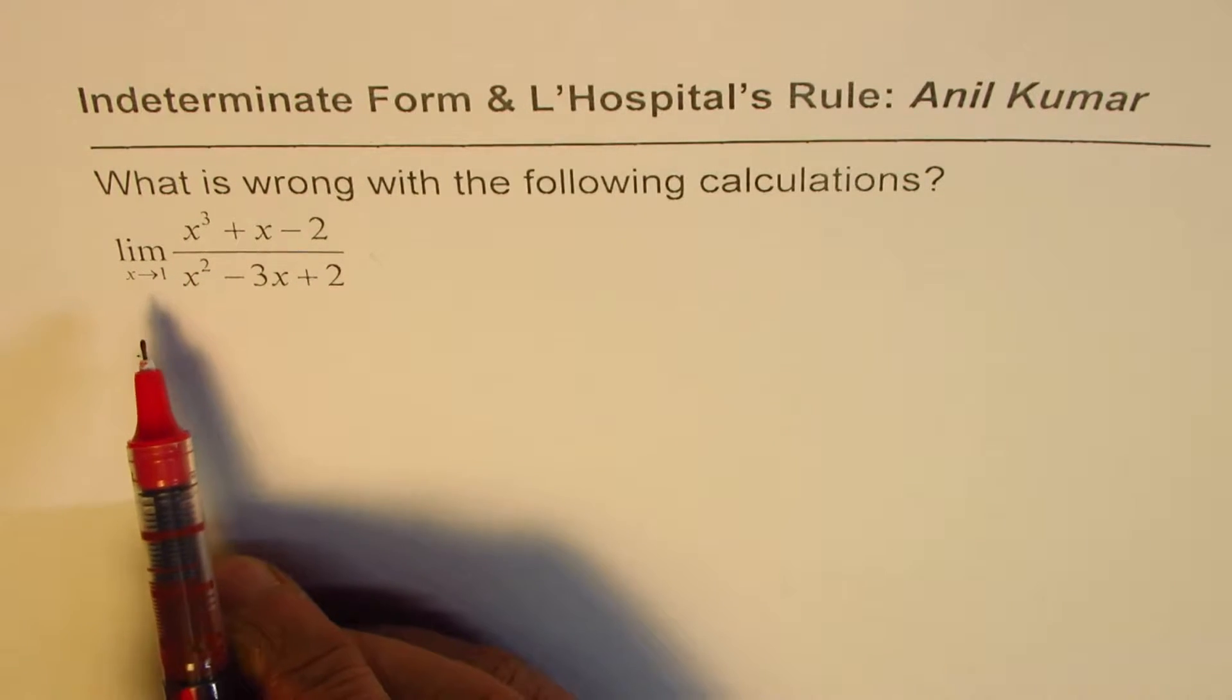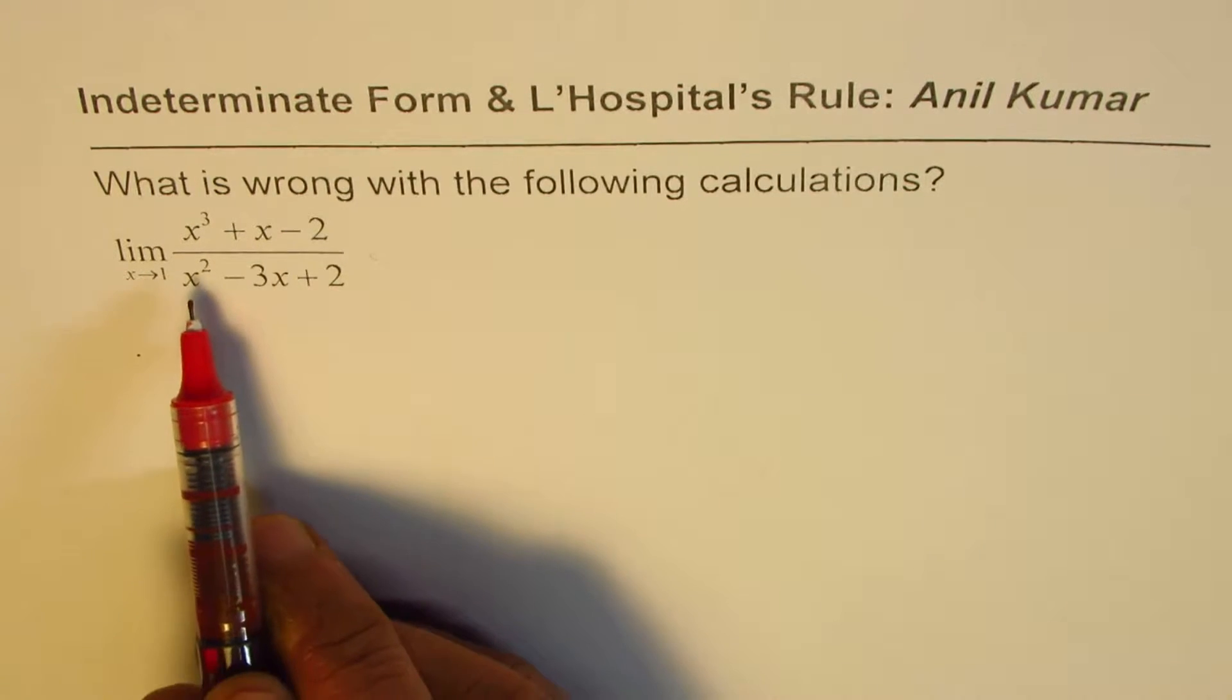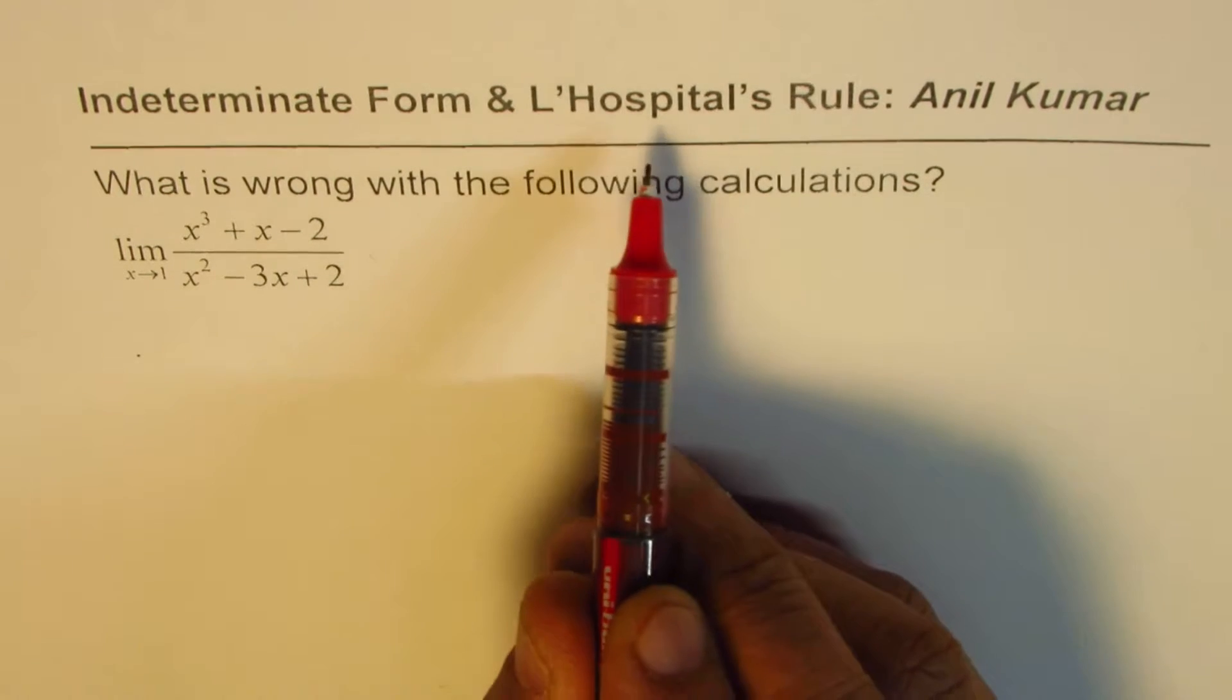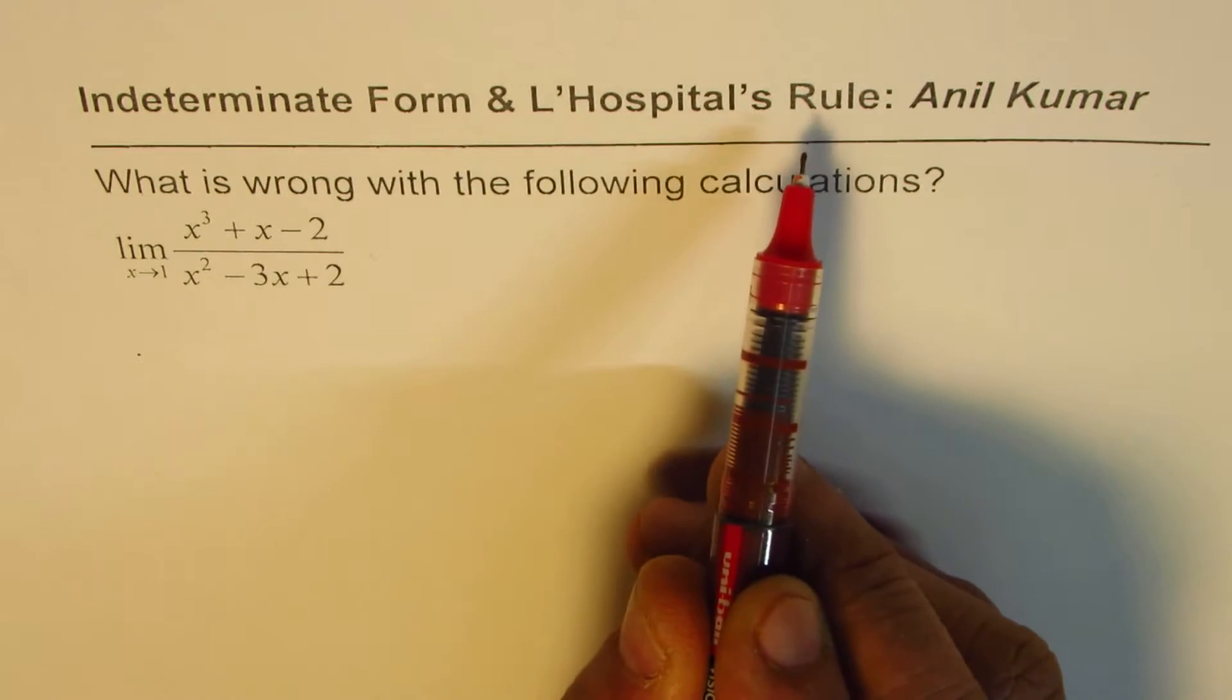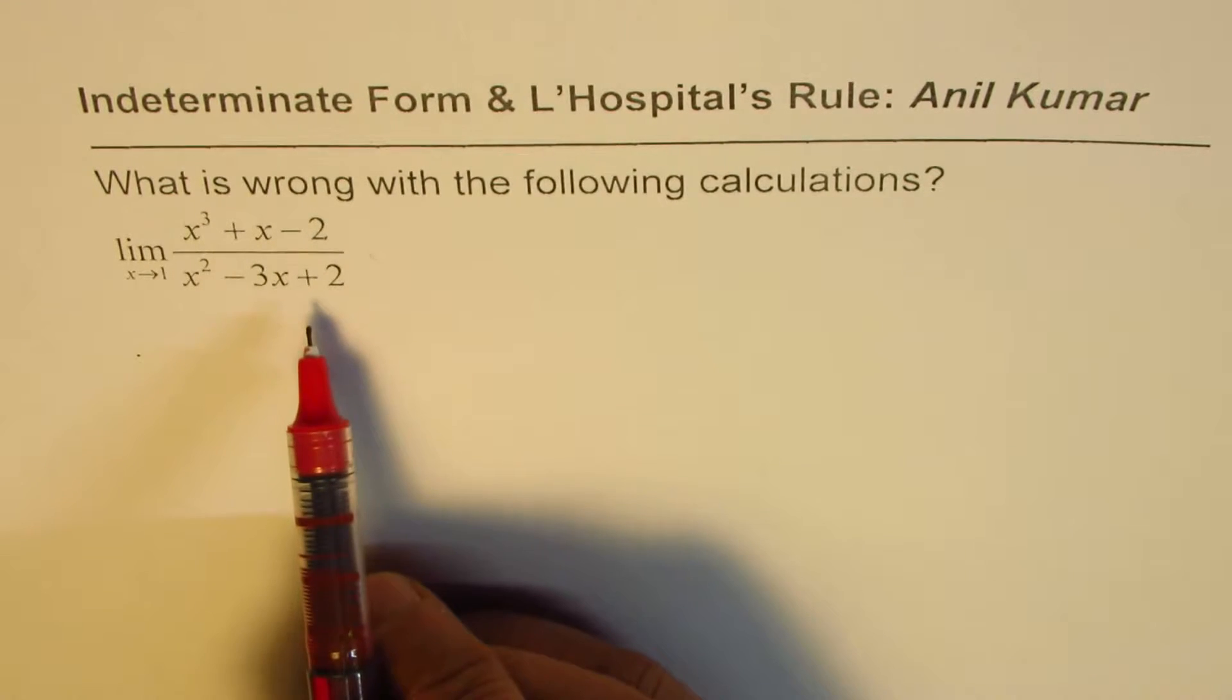The question is to find limit when x approaches 1 for (x³ + x - 2) divided by (x² - 3x + 2). Now whenever you need to apply L'Hospital's rule, it is important to check whether we have the required indeterminate form or not.